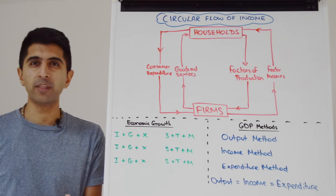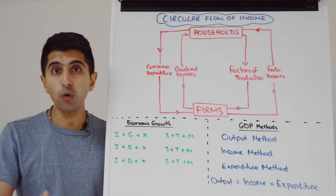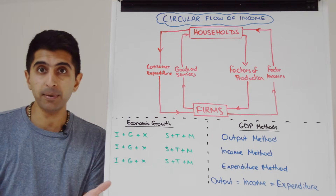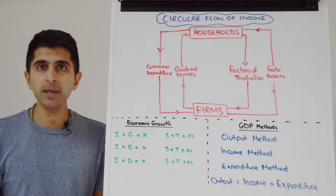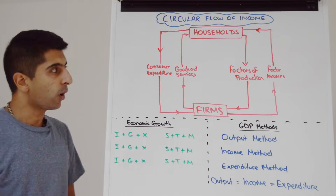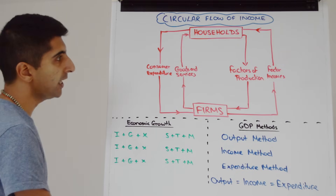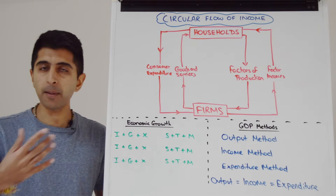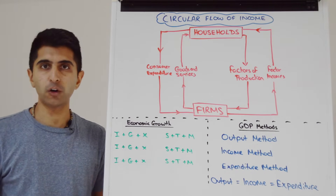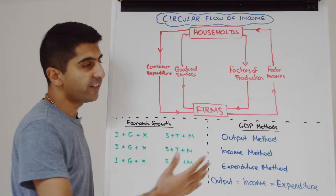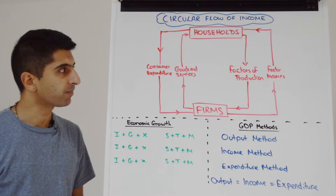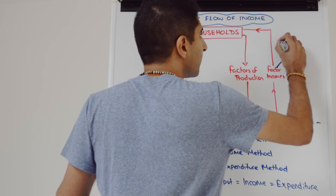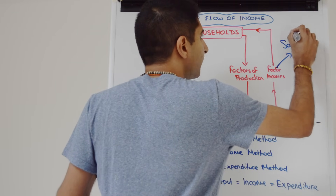It's very clear from this model that we've simplified things far too much. We've ignored two fundamental sectors: the government and the international sector. We've also assumed all income earned by households is spent on goods and services — a ludicrous assumption. Not all income is actually spent. For example, we could save a part of that income. Savings, known as S.